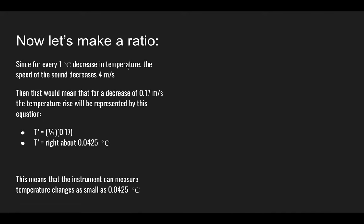This is basically the final step. This is where it gets confusing. We need to make a ratio. We know that for every 1 degree Celsius decrease in temperature, the speed of sound will decrease 4 meters per second. So we have to set up an equation where we need to cancel out the meters per second. Because this is a ratio right here. Every 1, you get 4, right? So 1 over 4.